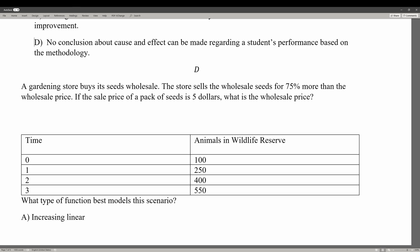A gardening store buys its seeds wholesale. The store sells the wholesale seeds for 75% more than the wholesale price. If the sale price of a pack of seeds is $5, what is the wholesale price? In this case, we could think of this as $1.75 times the original price, or the wholesale price. So if the sale price is $5, we just divide by $1.75 and we get $2.86.